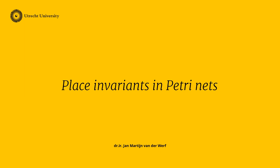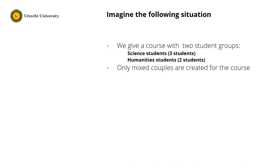In this clip, I want to discuss structural properties of Petri nets, and in particular I want to focus on places. Imagine the following situation: we give a course with two student groups — science students and humanities students — with three students of the former and two of the latter. In our course we only allow mixed couples, so we take one science student and one humanities student and create a couple.